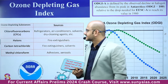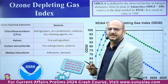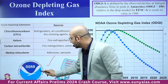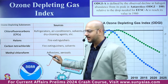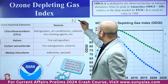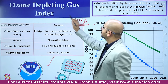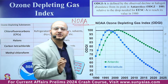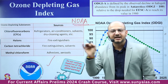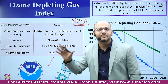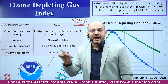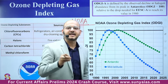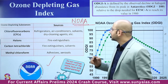The Ozone Depleting Gas Index is released by NOAA — the National Oceanic and Atmospheric Administration. In your static portion you would have read about the Vienna Convention 1985, the Montreal Protocol 1987, and the Kigali Agreement which was adopted in 2016 and later enforced in 2019.